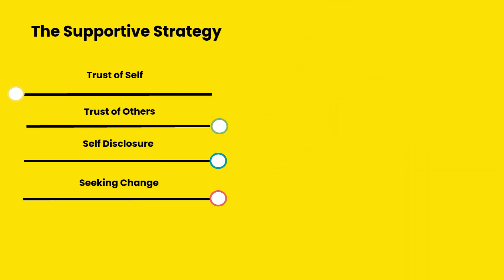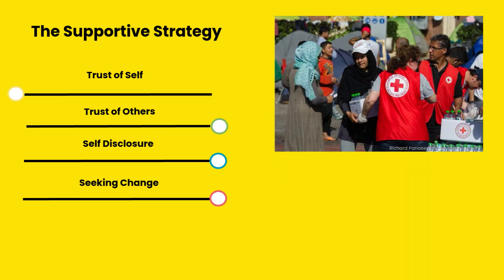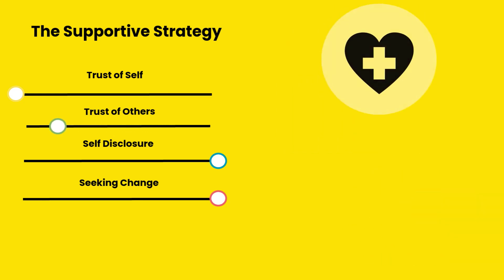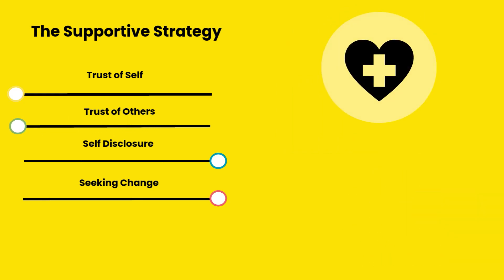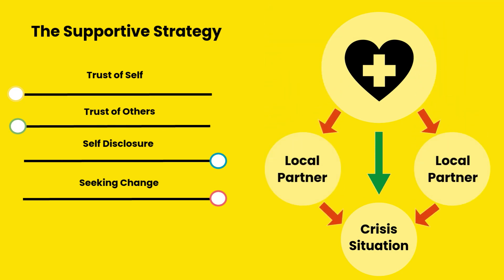By comparison, while aid organizations such as Doctors Without Borders and the Red Cross also use the supportive strategy, they utilize the cool variant. They exhibit a low trust of others, deploying emergency aid directly into crisis situations rather than working more collaboratively through other local partners.